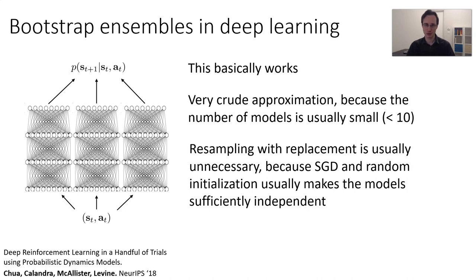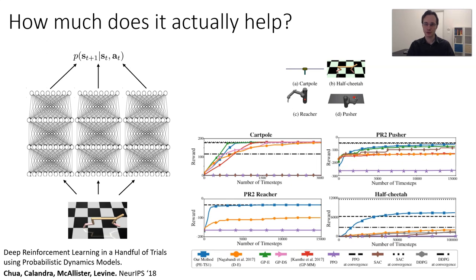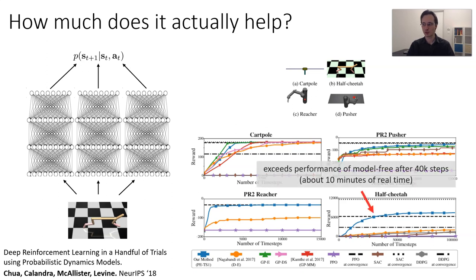Here are a few benchmark tasks: cart-pole, half-cheetah, reacher, pusher. The blue line shows the proposed method called PETS, using bootstrap ensembles with model-based RL. For the half-cheetah task, we saw that plain model-based training reached 500 reward, while model-free fine-tuning reached 5,000 after the equivalent of about 10 days of training. Here, the ensemble-based model-based method reaches around 6,000 after just 40,000 steps — about 10 minutes of training — drastically faster than the model-free approach. Simply modeling uncertainty, even in this crude way using ensembles, makes model-based RL work much, much better.